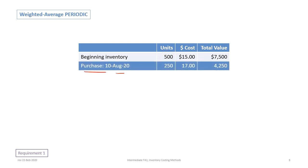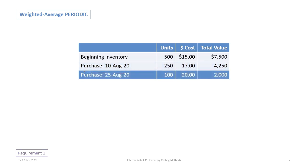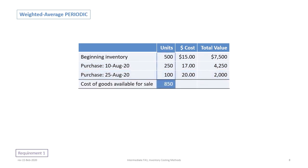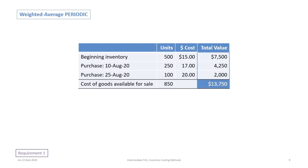We then include our first purchase of 250 units at $17 for a total of $4,250, and a second purchase of 100 units at $20 for a total of $2,000. Combining beginning inventory plus both purchases gives us cost of goods available for sale: 500 + 250 + 100 = 850 units, with a total dollar value of $7,500 + $4,250 + $2,000 = $13,750 for the 850 units available.